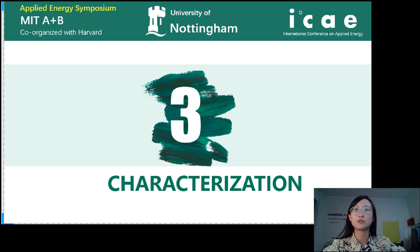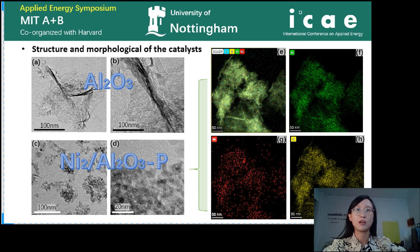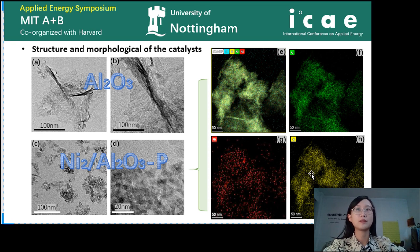Then we come to the characterization. Here shows the HRTEM of the alumina support and the nickel alumina P catalyst. From the HRTEM, we can see small particles on the surface in the range of 2 to 4 nanometers. These small particles indicate that the nickel on the surface of alumina does not form large particles, which is beneficial to the dispersion of nickel. Figures E to H show the elemental mapping of nickel alumina P. The mapping of the nickel element shows a similar shape to the alumina and oxygen elements, further confirming the well-dispersed nickel species on the surface of alumina.